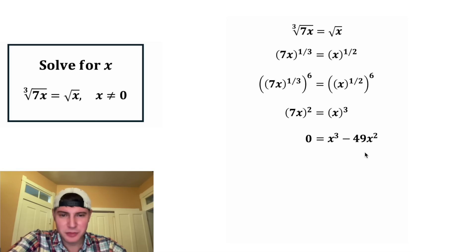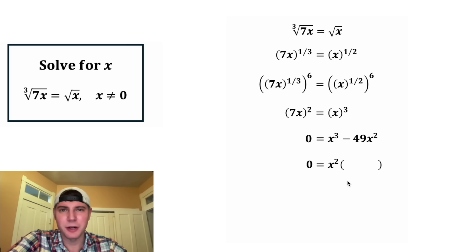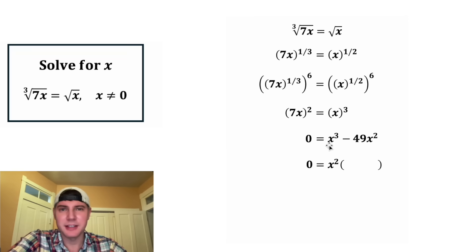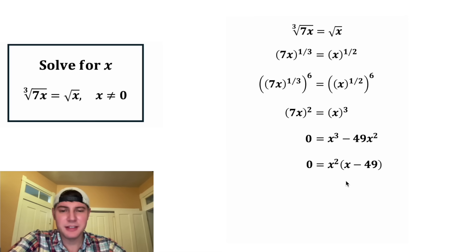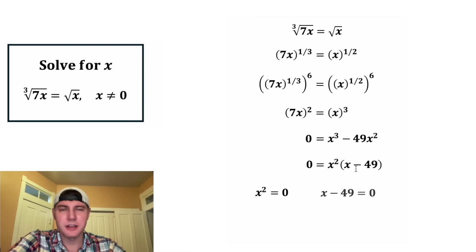Both of these terms contain at least an x squared, so we can factor out x squared. For the first term, x squared times what gives us x cubed? That's x. And then for the second term, x squared times what gives us 49x squared? That'll be 49. So now we have zero equals x squared times (x minus 49).